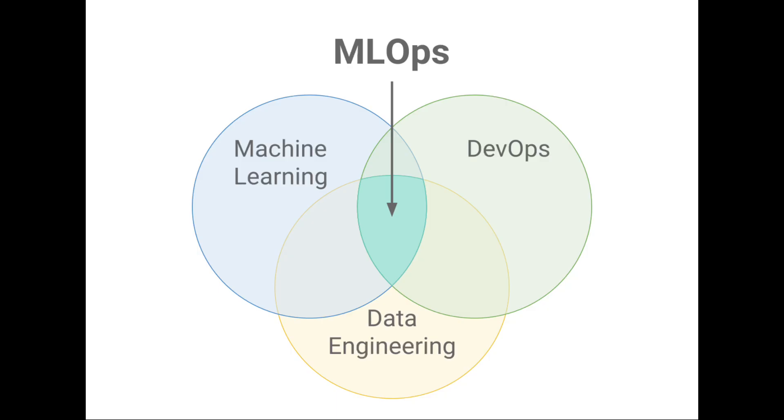Deployments: if you create a project, you deploy it. Understand DevOps — Development plus Operations — that's MLOps for AI. Just understanding it is enough. Technologies include Flask, Fast API, Docker, AWS, and GCP.